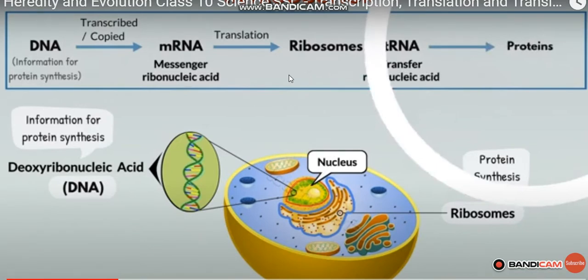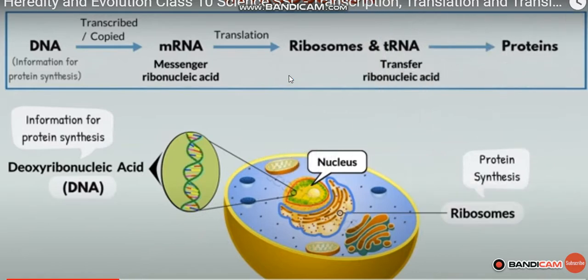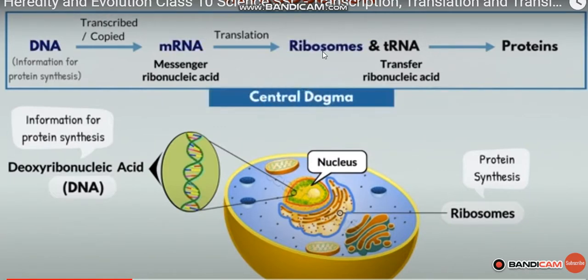The basic flow of information is: DNA to mRNA, and mRNA to the ribosome. This process is called the central dogma — this is the basic principle of molecular biology.